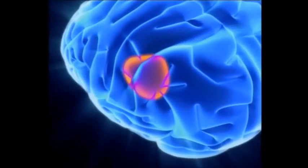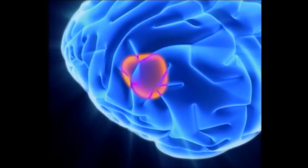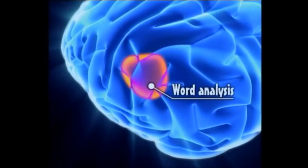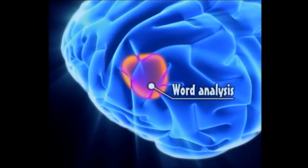At the back of the brain, there is an area for analyzing words, which pulls the word apart even more by analyzing the syllables and the phonemes.